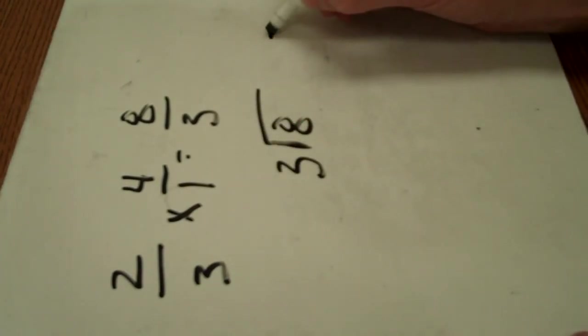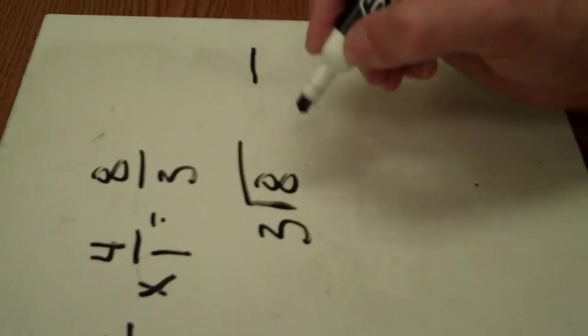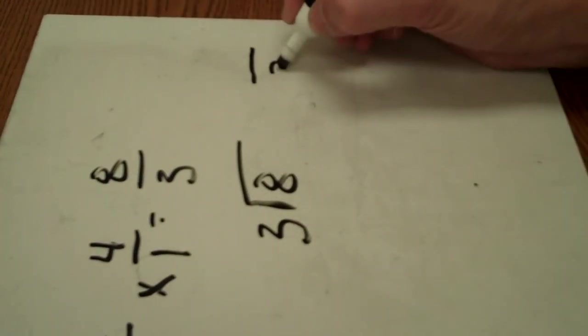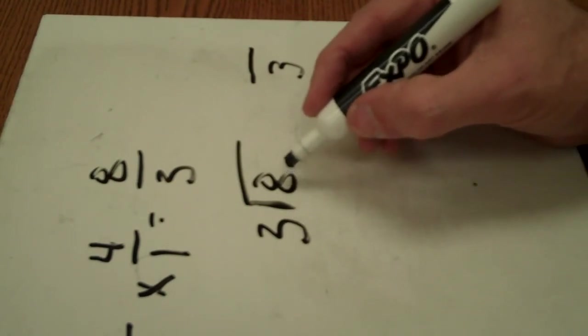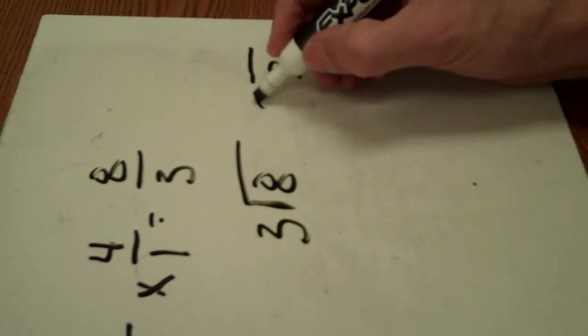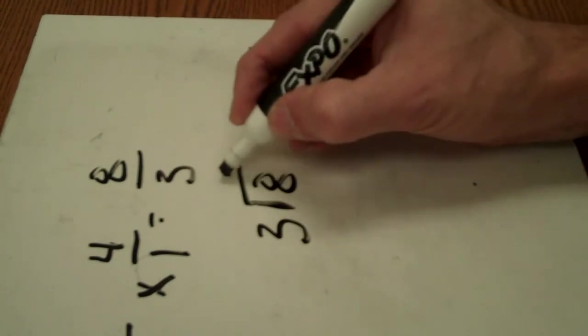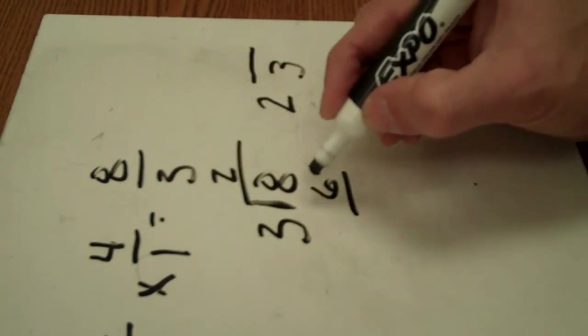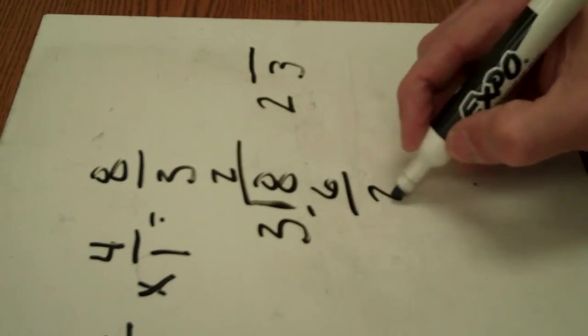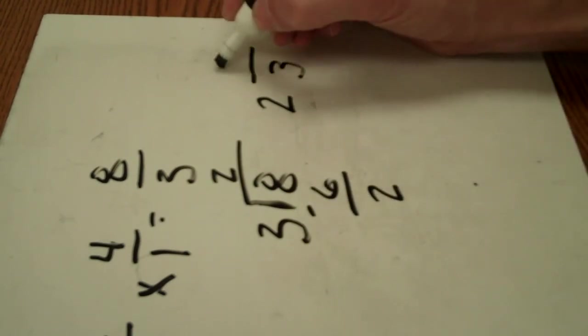I go ahead and set this up over here if I want to. I know the 3 is going to be on the bottom. The whole number, however many times 3 will go into 8, it'll go 2 times, right? We'll go out front because 2 times 3 is 6. You subtract 6 from 8, you get 2. The remainder goes on top.